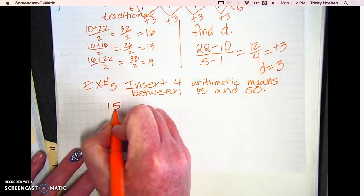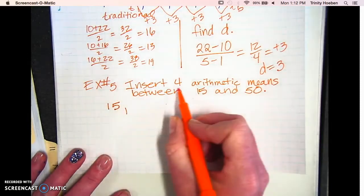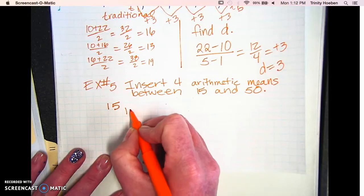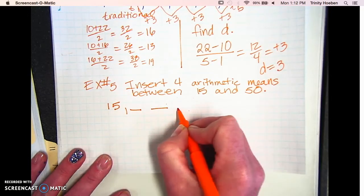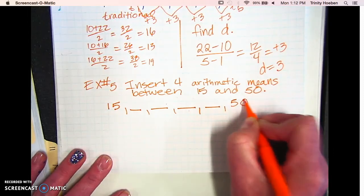So if we start with the list of terms, we start with 15, we're going to fill in four of those. So one, two, three, four, and end up with 50.